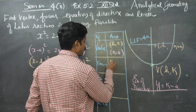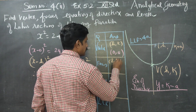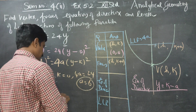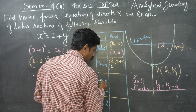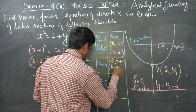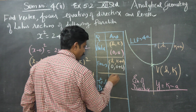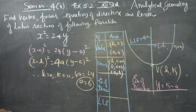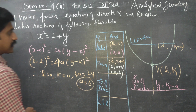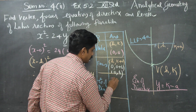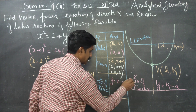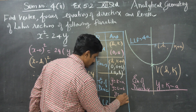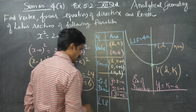My focus formula is h comma k plus a. Substituting: 0 comma 0 plus 6. Therefore my answer will be (0, 6). Equation of directrix formula: y equals k minus a. y equals 0 minus 6. y equals minus 6. This is the directrix.